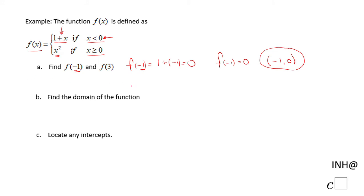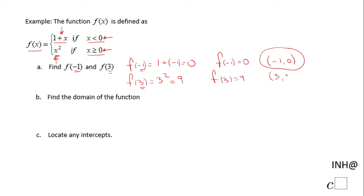For f of 3, notice that 3 is a number greater than 0, so we're going to use the second piece of the piecewise function. We have 3 squared, which is 9. So f of 3 is 9, which means the ordered pair is (3, 9).